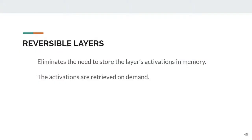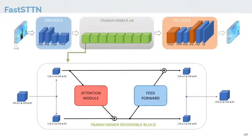This strategy allows for a reduction in memory usage by up to 7 times and approximately 2.2 times faster execution time. The reversible layers method eliminates the need to store layer activations in memory — the activations are deleted from memory and retrieved on-demand during backpropagation. In the overall architecture of the FAST STTN, similar to the STTN, T-frames and binary masks enter the network through an encoder, 8 transformer blocks, and a decoder. The reversible layers method is applied directly to the transformer blocks.